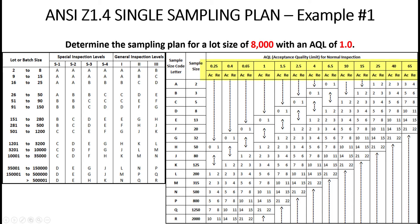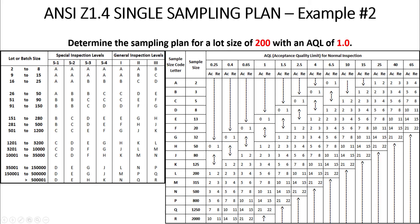When picking your AQL, it has to be risk-based. You must think about the quality attribute you're inspecting for and pick that worst tolerable process average for that defect, aligned with your overall risk management strategy. Now let's change the example to understand the nuances of the table. With a lot size of 200 and an AQL of 1.0, we look up sample size code letter G.